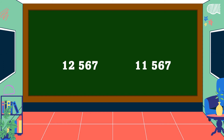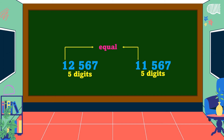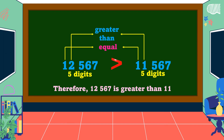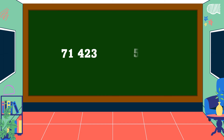Let's study the following examples to understand how to compare large numbers. First example: count the digits in each number. The first number has five digits, and the second number also has five digits. Compare from the highest place value: one and one are equal. Next digit: two and one — two is greater than one. So the relation symbol is greater than. Therefore, 12,567 is greater than 11,567.